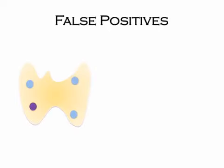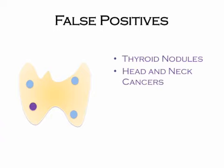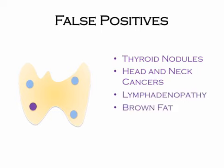What can cause false positives? There are a few: thyroid nodules, head and neck cancers (which tend to have increased blood flow and increased mitochondria), lymph nodes — especially abnormal ones like metastatic lymph nodes — and brown fat, which has a lot of mitochondria.